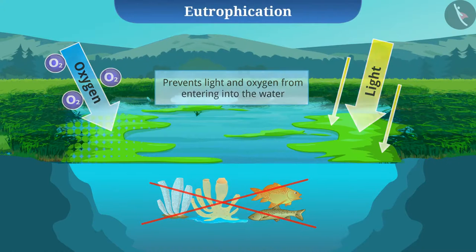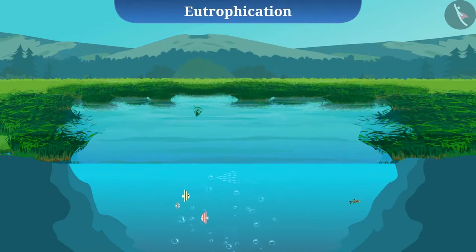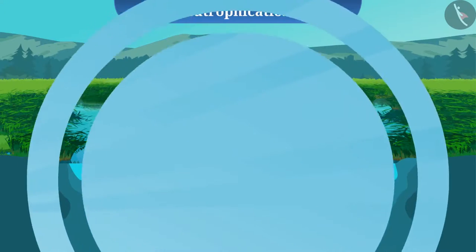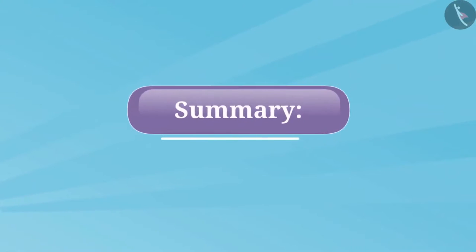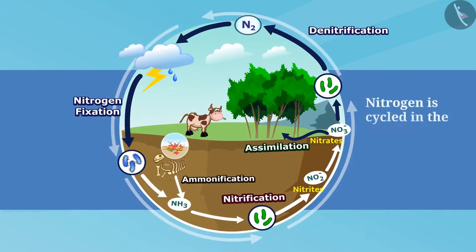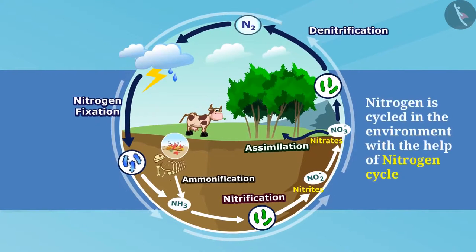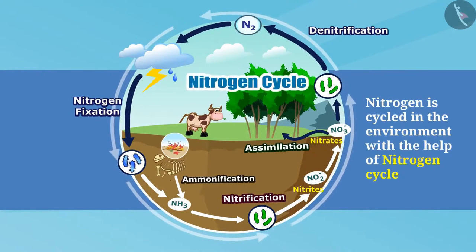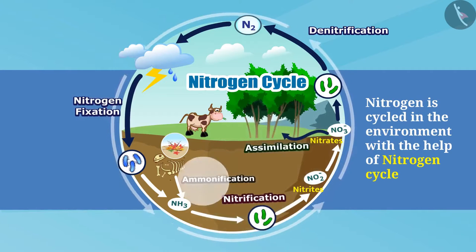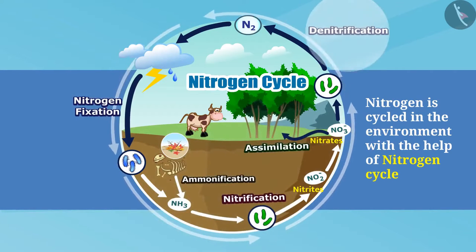We must take preventive measures to avoid such conditions and conserve our environment. To summarize, nitrogen is cycled in the environment with the help of the nitrogen cycle. Various stages of the nitrogen cycle include nitrogen fixation, nitrification, assimilation, ammonification, and denitrification. We also talked about eutrophication.